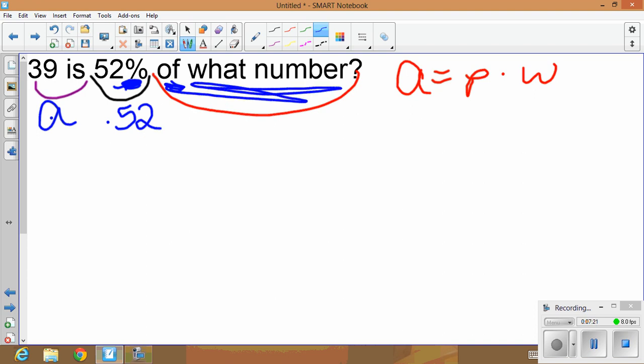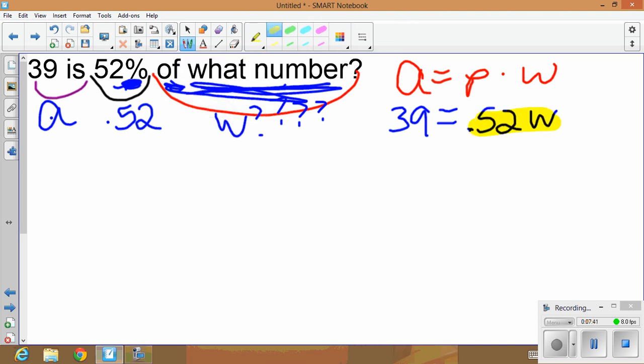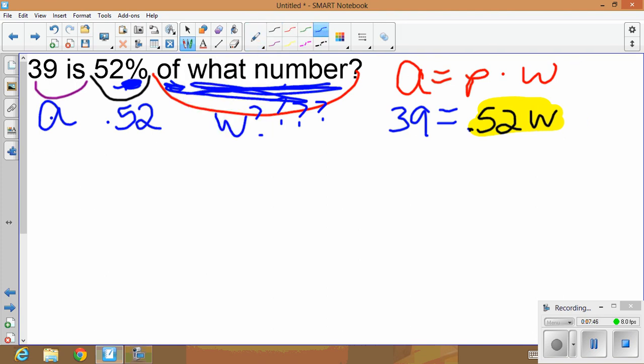Of what number? Of what total? So my w is the piece that I'm looking for. So I'm going to take all this information and put it in the equation. So 39 equals 0.52w. So what I want to do is I want to isolate this variable. I want to find out what w equals 0.52, so I'm going to divide both sides by 0.52. So you take 39 divide 0.52, and you get an answer of w equals 75.